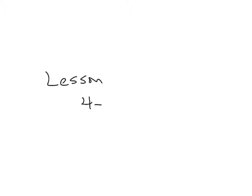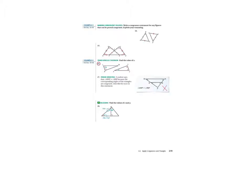In this video, I'm going to go over some of the homework questions from lesson 4-2. I do believe that we did cover number 12 in class. This one can't be proven congruent because we only have one of the angle pairs marked as congruent.